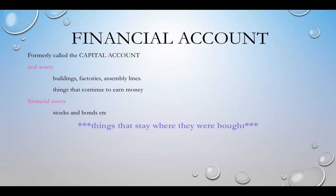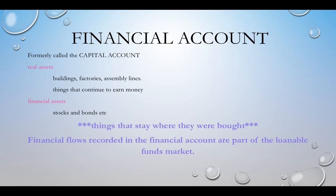If you buy stocks in a Japanese company, you're not taking that company with you — the business stays there. If you buy a building in another country, the building stays there. When that building earns money and the money comes back to you, that income would be part of the current account.